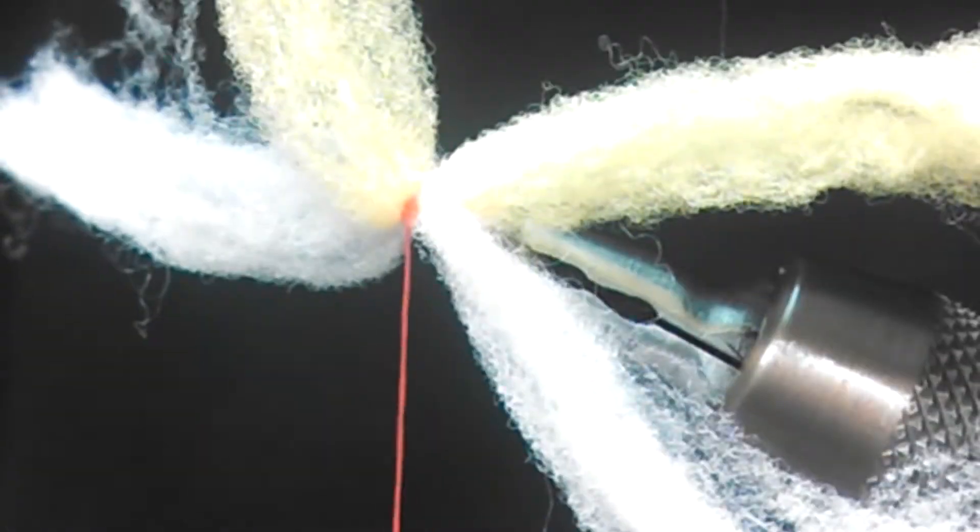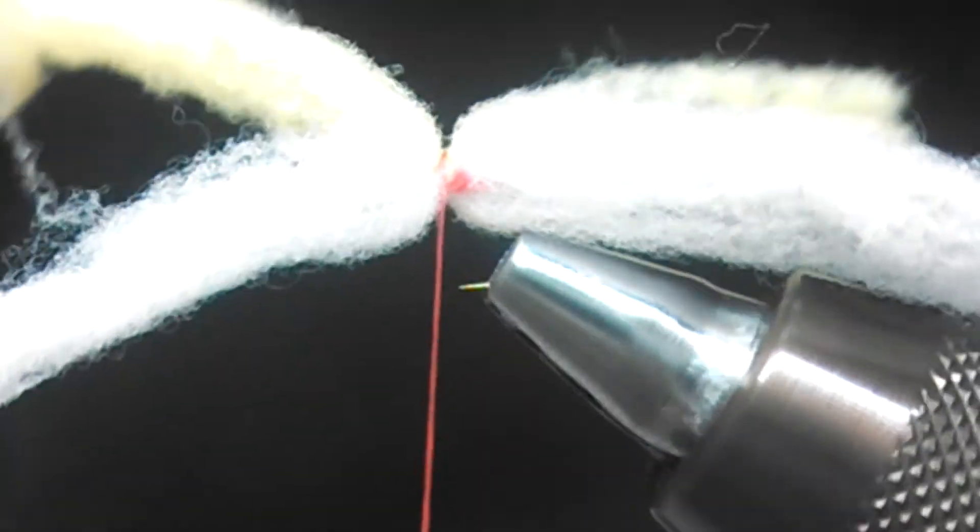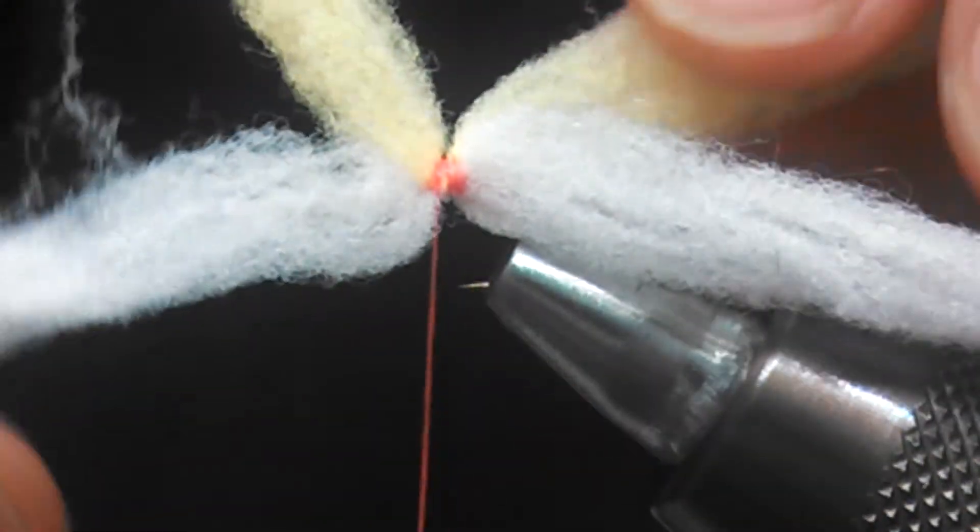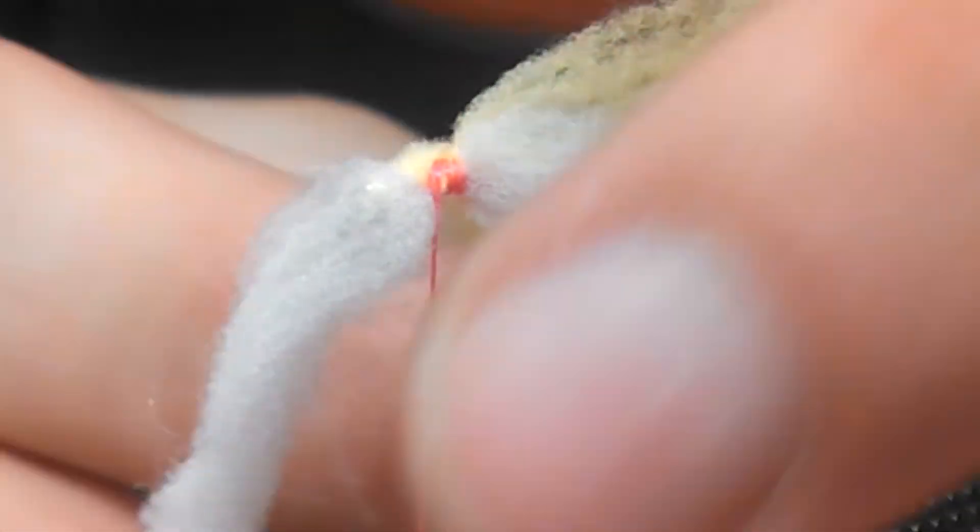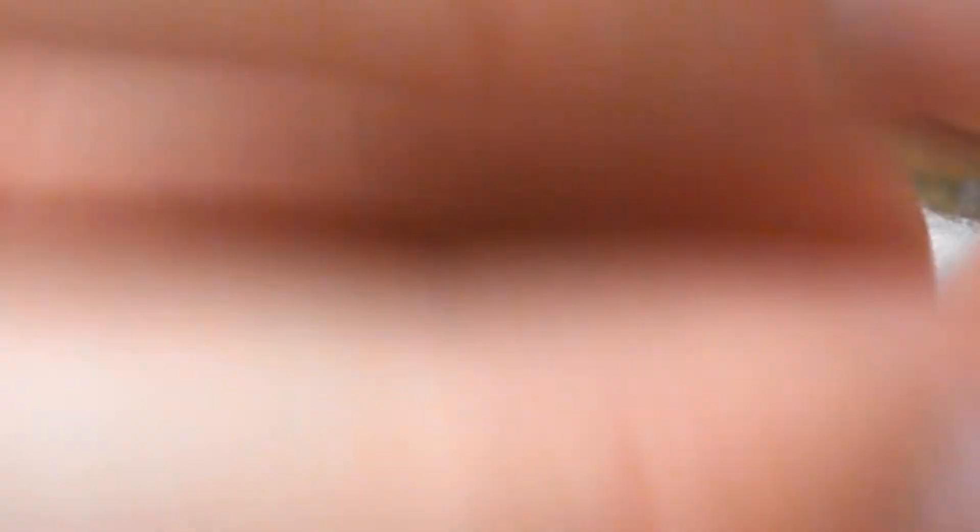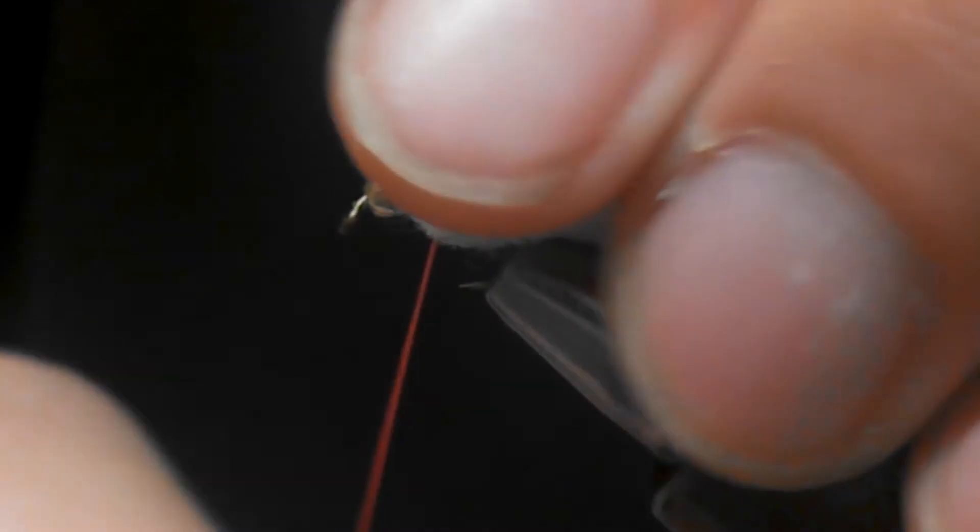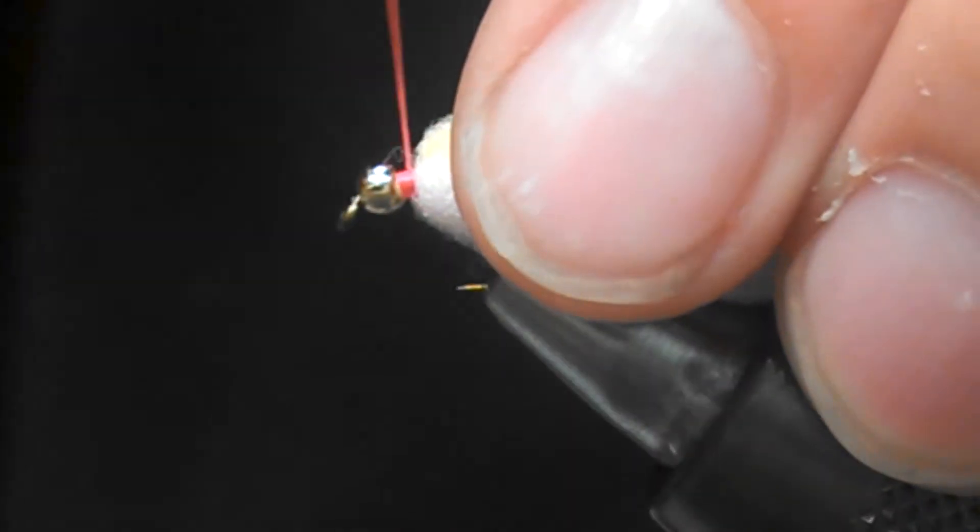Now you'll see we have a bit of an X-type pattern here. This is about what you're looking for. We're going to bring these back over this way, get them back a little bit towards the body. And now we're just going to tie up behind the head here.